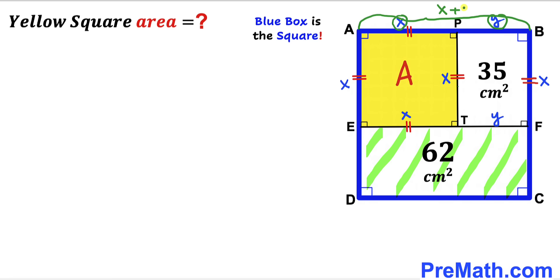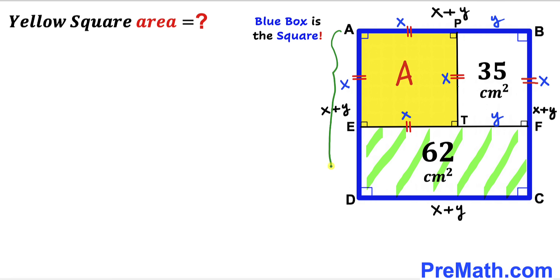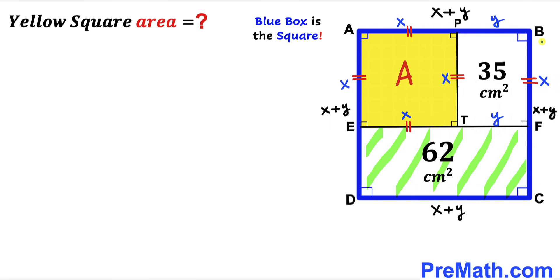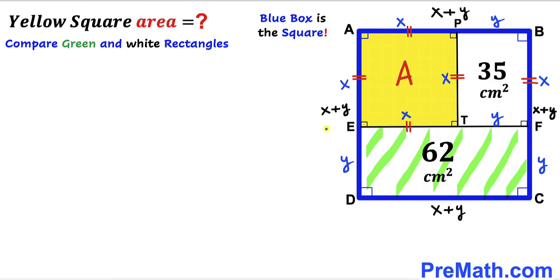Since we are dealing with the big blue square, all four of its side lengths are x plus y. We know BF is x and the whole length BC is x plus y, so FC must be y. Therefore segment ED is y as well.